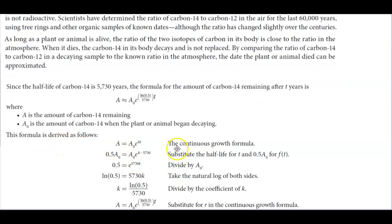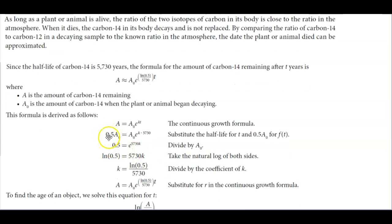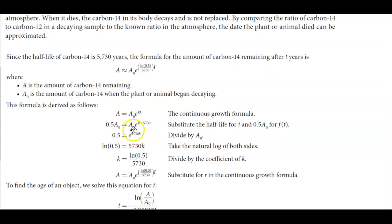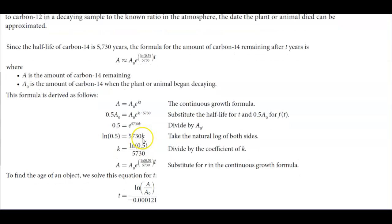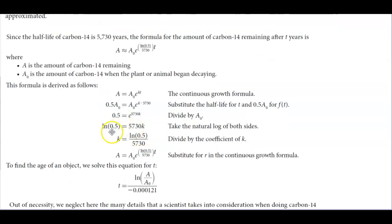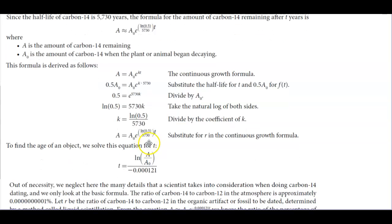This formula is derived as follows using the continuous growth formula. We have 0.5A₀ = A₀e^(k×5730). Then we divide both sides by A₀, which leaves us with 0.5 = e^(5730k). Taking the natural log of both sides, we get ln(0.5) = 5730k. So now we have that formula.